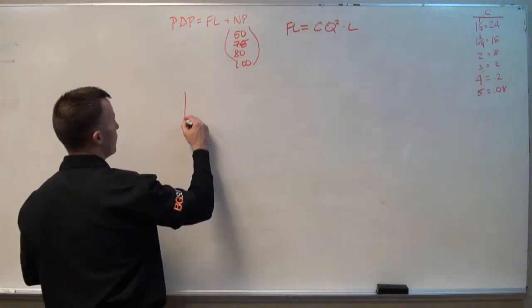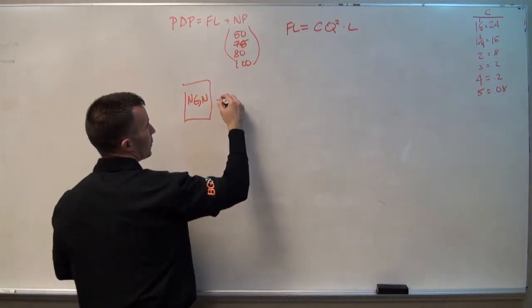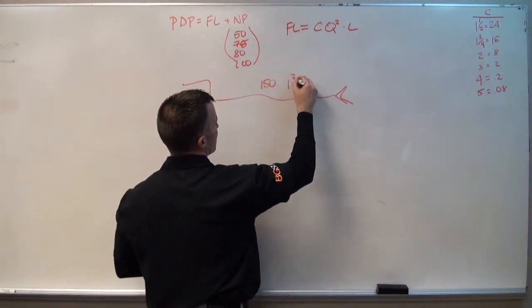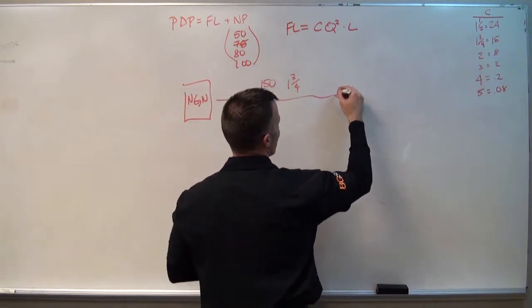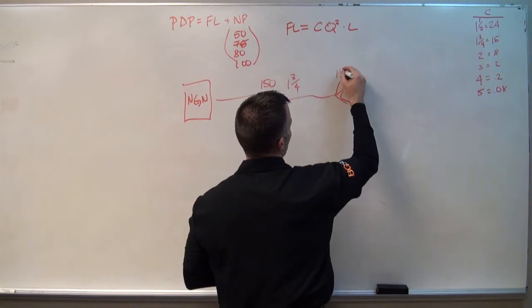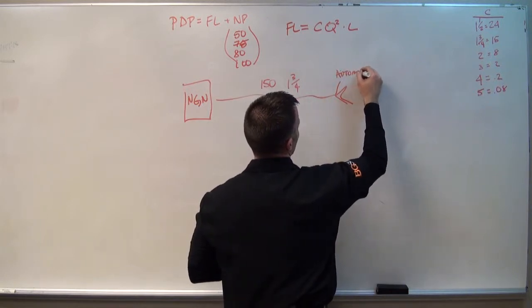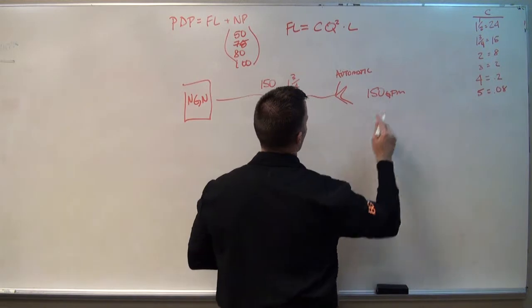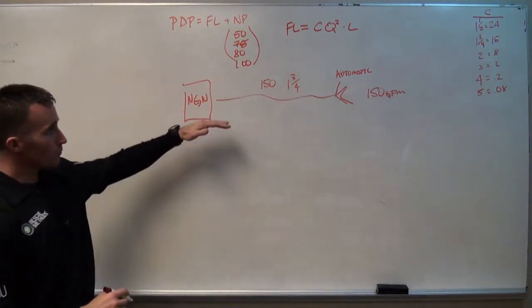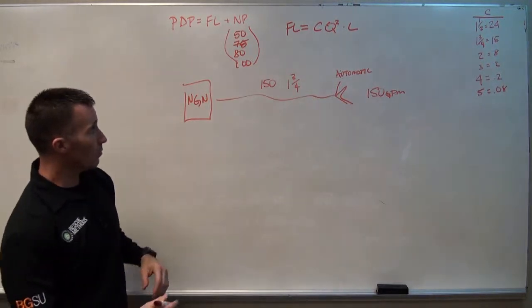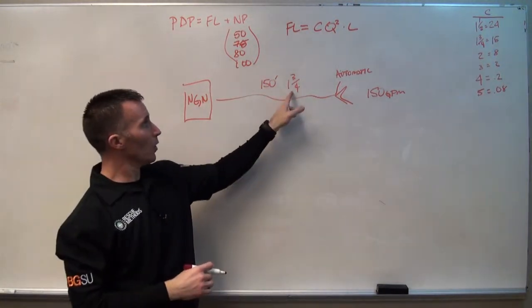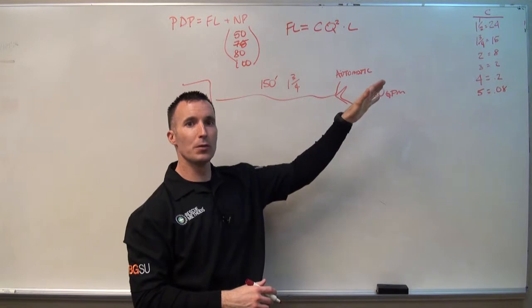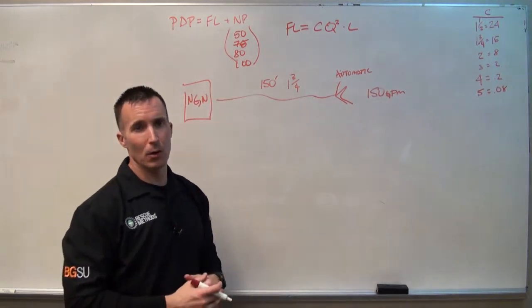Let's take, for example, another engine. In this case, we're going to stretch 150 foot of inch and three quarter. We're going to put a standard 100 pound automatic on the end of it, and I want to flow 150 gallons a minute. So when we start breaking this down and asking ourselves, what size is the hose? The hose is inch and three quarter. Once we know that the hose is inch and three quarter, that automatically tells us our coefficient is going to be 15, the generally accepted coefficient.